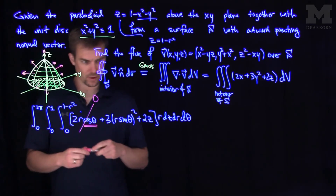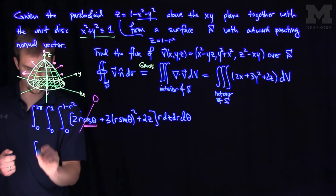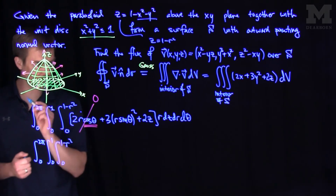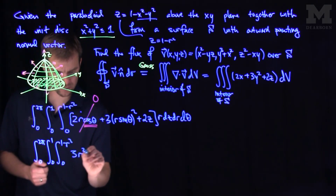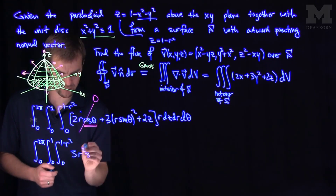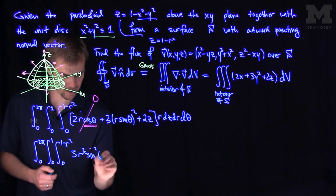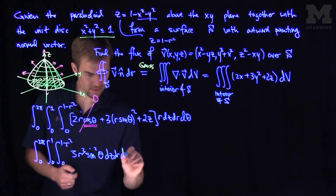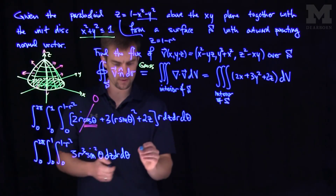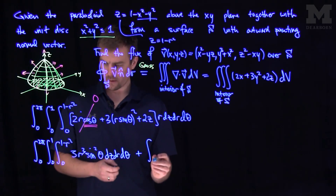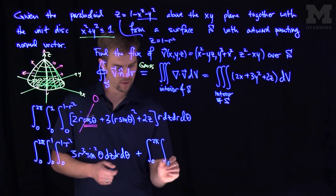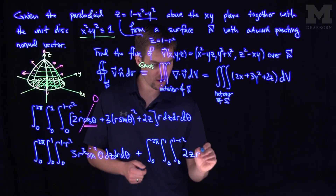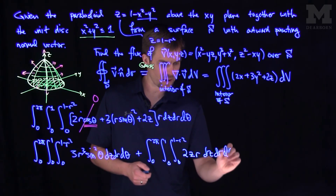The first integral is the integral from 0 to 2pi, integral from 0 to 1, integral from 0 to 1 minus r squared, of 3r cubed sine squared theta, then dz dr d theta. The second integral is the integral from 0 to 2pi, integral from 0 to 1, integral from 0 to 1 minus r squared, of 2zr dz dr d theta.